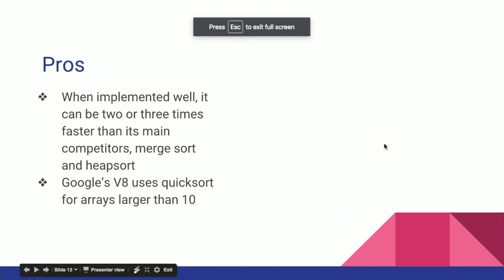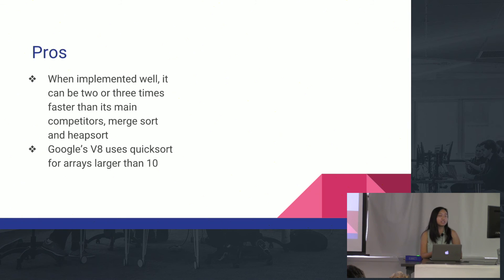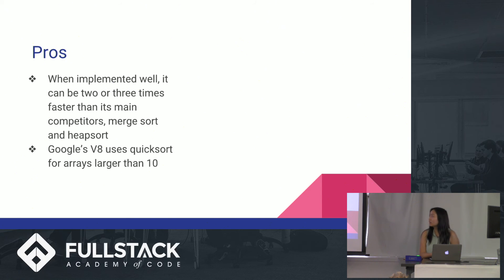So the pros to quicksort is that when implemented well, it can actually be two to three times faster than its main competitors merge sort and heap sort. And also Google's V8 array.sort uses quicksort, while Mozilla uses merge sort. So there are pros and cons to both.